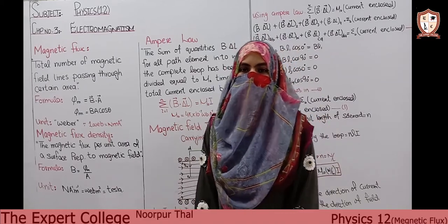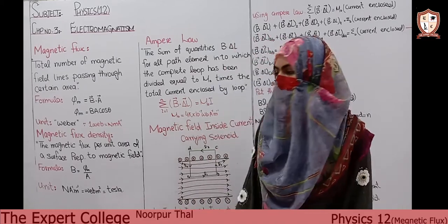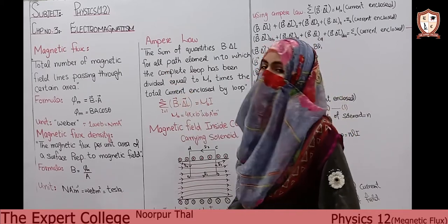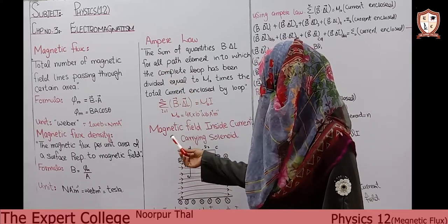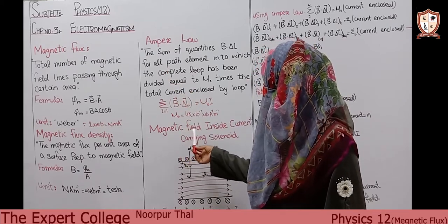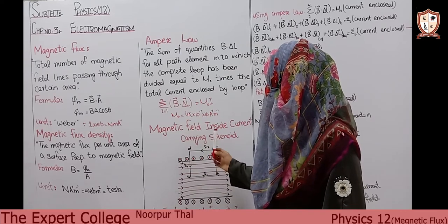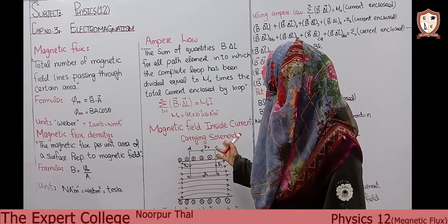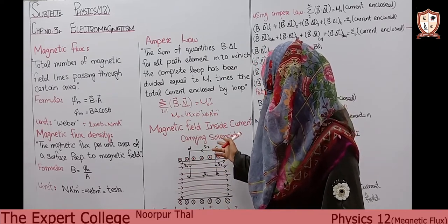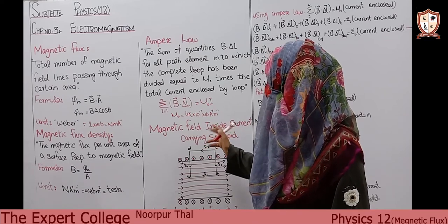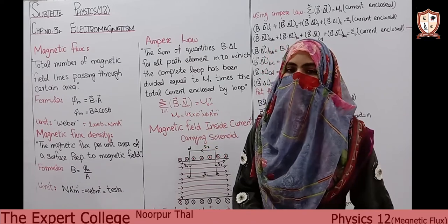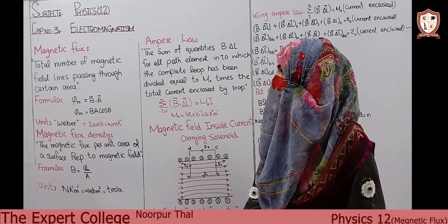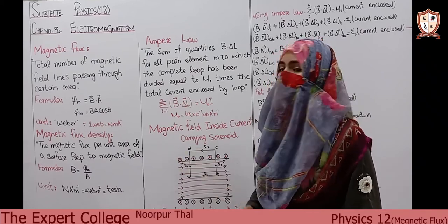Today we have to start our long question of chapter number three, electromagnetism. The class topic is the magnetic field inside a current-carrying solenoid. We have a solenoid and we have to find out the magnetic field produced by it. First we have some terms we have to explain.